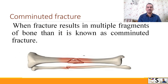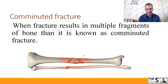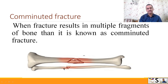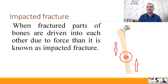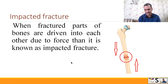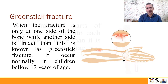Another type is comminuted fracture. When the fracture results in multiple fragments of the bone, then it is known as comminuted fracture. In this figure you can see the bone is fractured and there are many fragments. Next is impacted fracture. When the fractured parts of bone are driven into each other due to force, then it is known as impacted fracture — both ends of the bone are driven into each other.